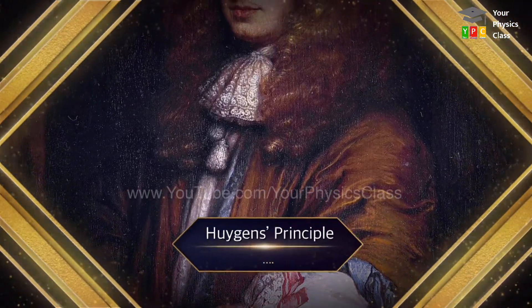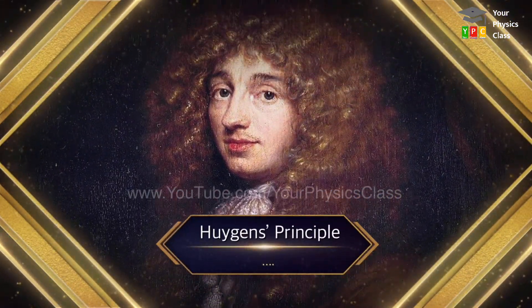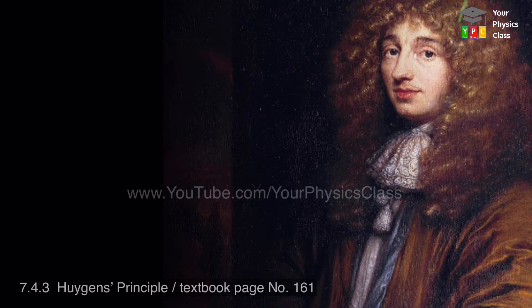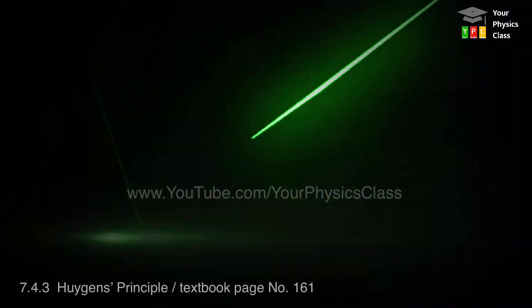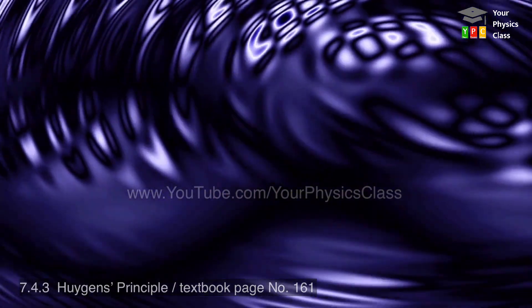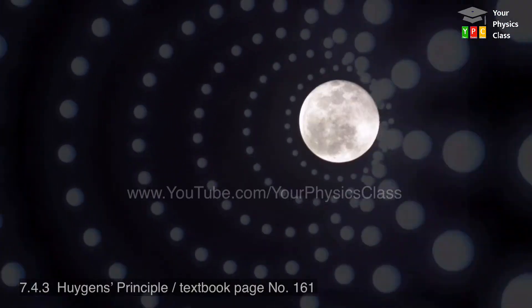Now let us see Huygens' principle. Huygens had assumed that the light to be a wave similar to mechanical wave like water wave or sound wave propagating in ether.